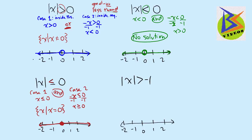Finally, the absolute value of x is greater than negative one. You can see pretty quickly that any absolute value greater than a negative is going to be any number, but let's work it out. Case one: x is greater than negative one — open circle on negative one with an arrow to the right. Case two: negative x is greater than negative one — dividing by negative one and flipping the inequality gives x is less than one, so an open circle on one with an arrow pointing left. Since this is a greater than, it is an OR statement, meaning the overlaps don't matter. Negative one is included in the second set, and one is included in the first, so our solution is all real numbers.